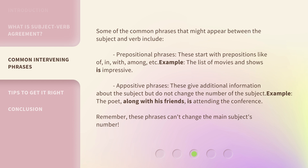Appositive Phrases give additional information about the subject but do not change the number of the subject. Example: 'The poet, along with his friends, is attending the conference.' Remember, these phrases can't change the main subject's number.